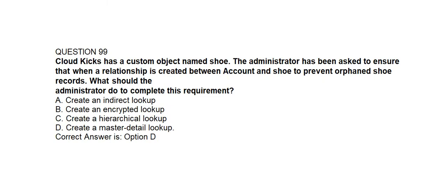Question number ninety-nine. CloudKix has a custom object named Sue. The administrator has been asked to ensure that when a relationship is created between Account and Sue, orphaned Sue records are prevented. What should the administrator do to complete this requirement? Option A: Create an indirect lookup. Option B: Create an encrypted lookup. Option C: Create a hierarchical lookup. Option D: Create a master-detail relationship. Correct answer is Option D: Create a master-detail relationship.